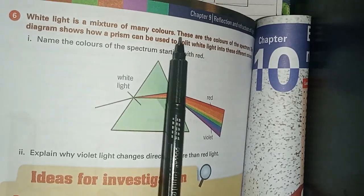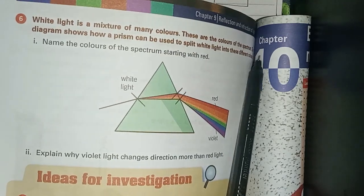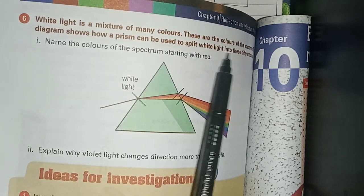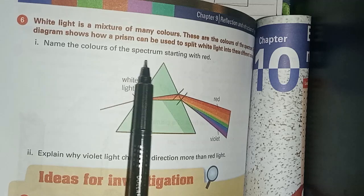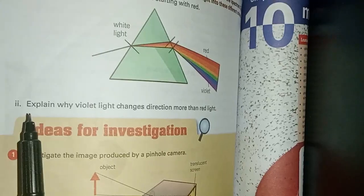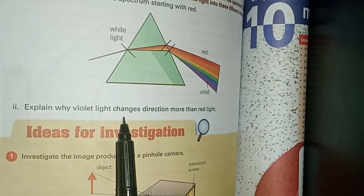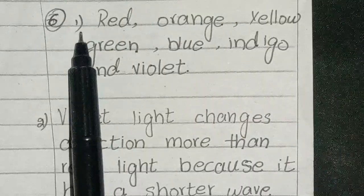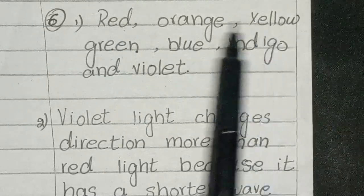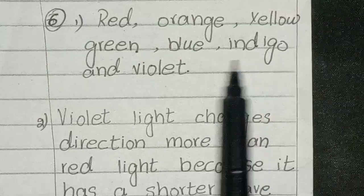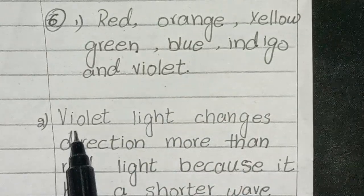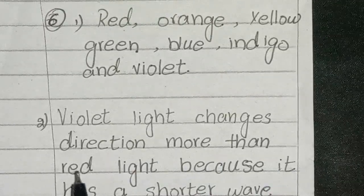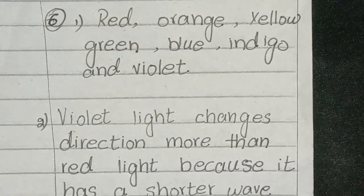Sixth question: white light is a mixture of many colors — these are the colors of the spectrum. The diagram shows how a prism can be used to split white light into these different colors. Name the colors of the spectrum starting with red: Red, Orange, Yellow, Green, Blue, Indigo, and Violet. Explain why violet light changes direction more than red light: violet light changes direction more than red light because it has a shorter wavelength. Exercise complete.